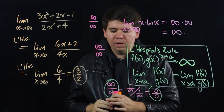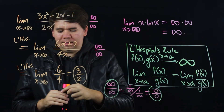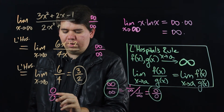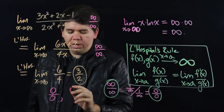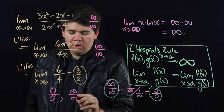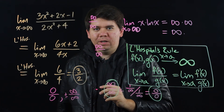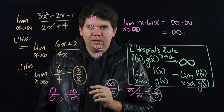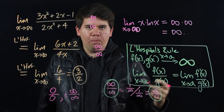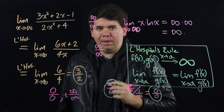In general, whenever you're trying to evaluate a limit and it's of the form either 0 over 0, or plus or minus infinity over infinity, we can simply apply L'Hôpital's rule and go from there.